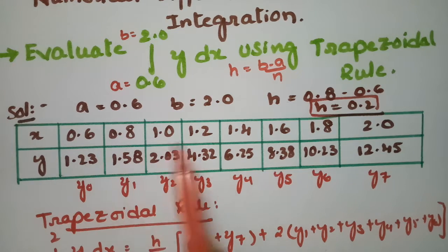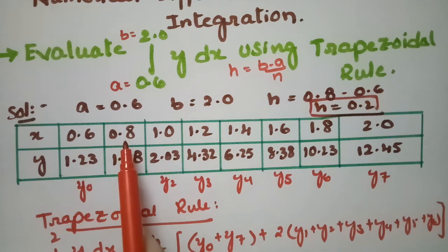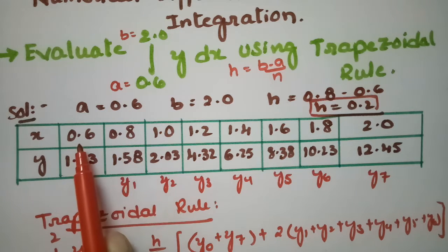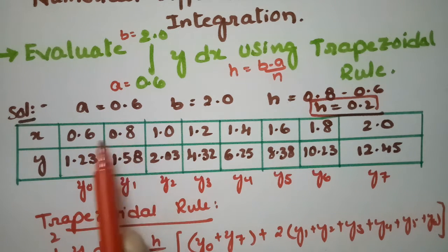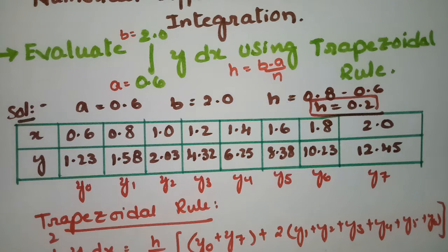Here, the table is already given. From this, we calculate the value of h. H is x2 minus x1, the difference between two intervals. So that is 0.8 minus 0.6, which equals 0.2.